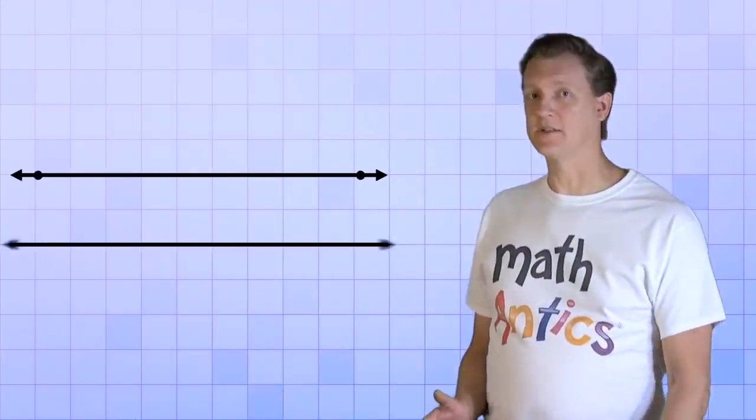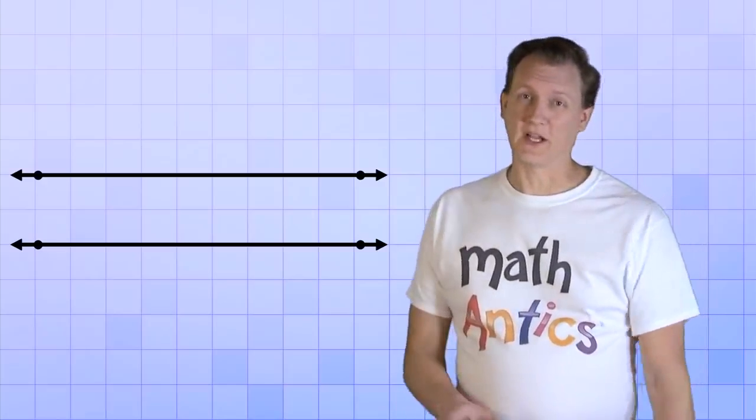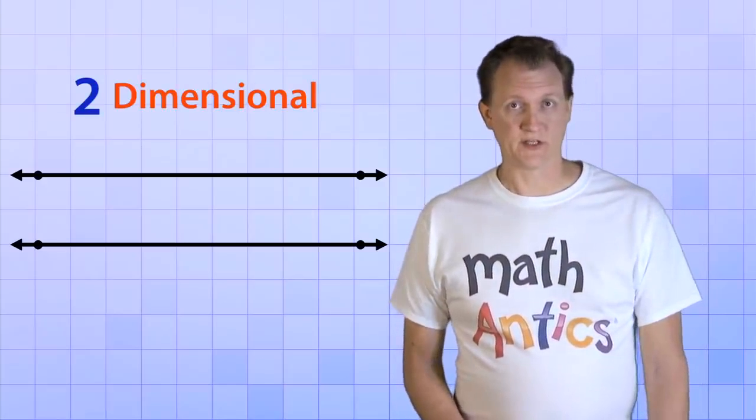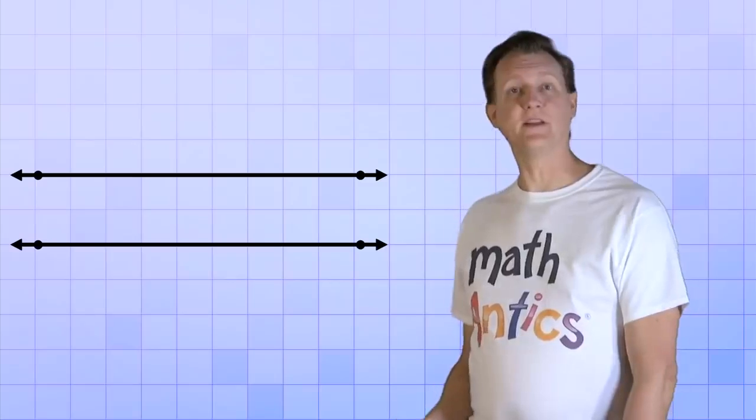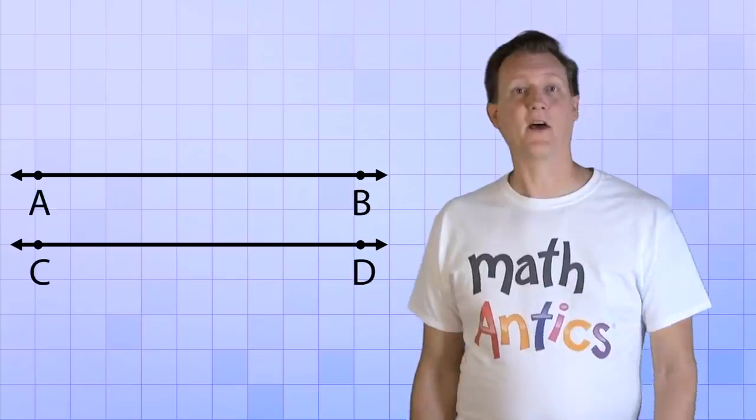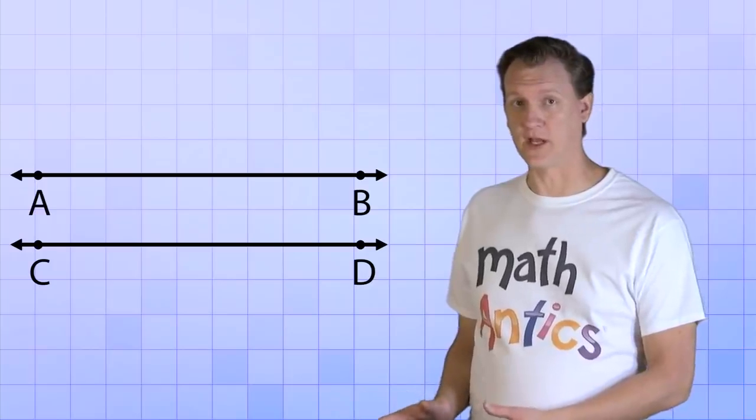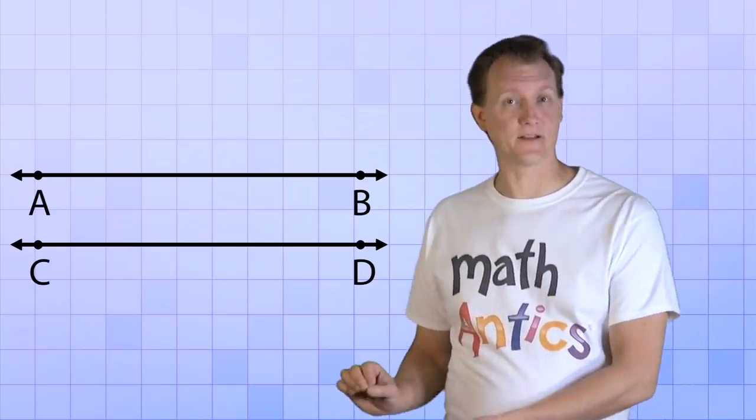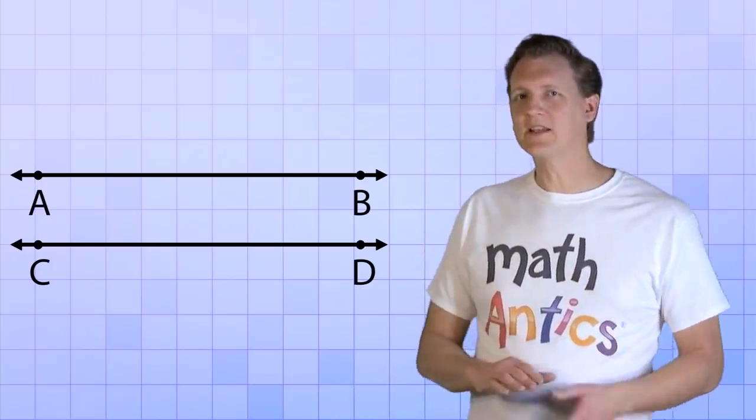So let's start with a couple of lines that are in the same plane. We're only going to be dealing with two-dimensional geometry in this video. These lines are conveniently called line AB and line CD. Now, the important thing to notice about these two lines is that they're pointing in exactly the same direction. So even if we extend them forever,